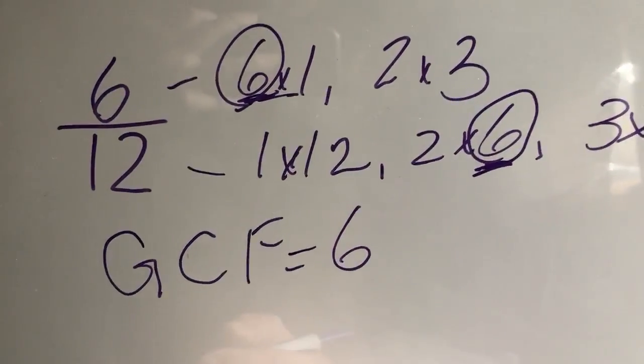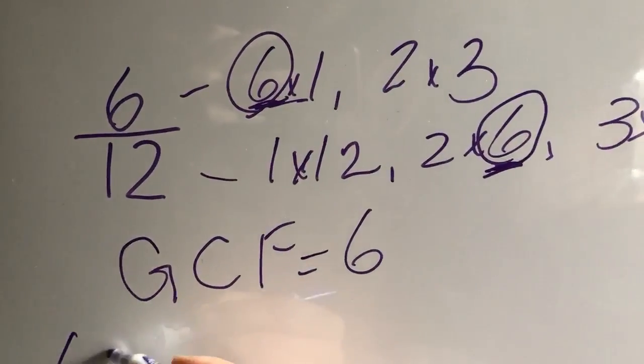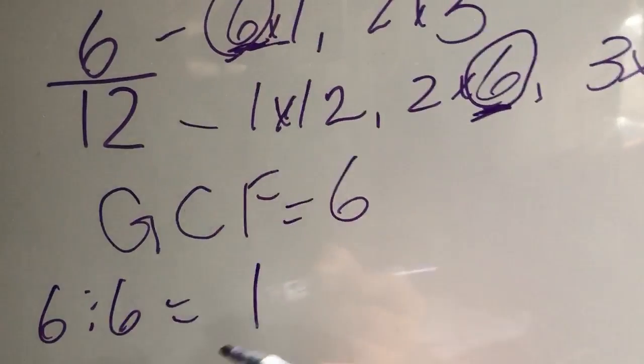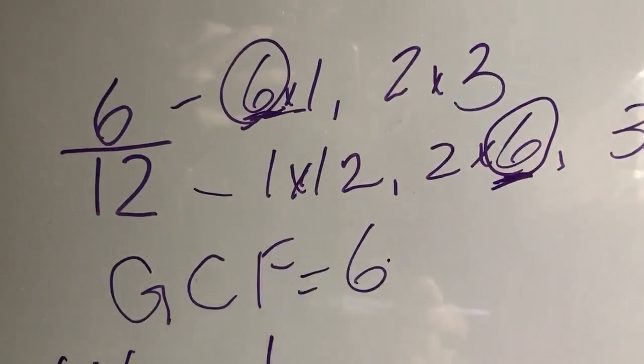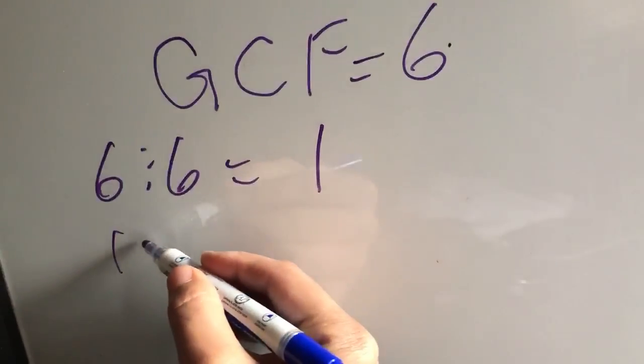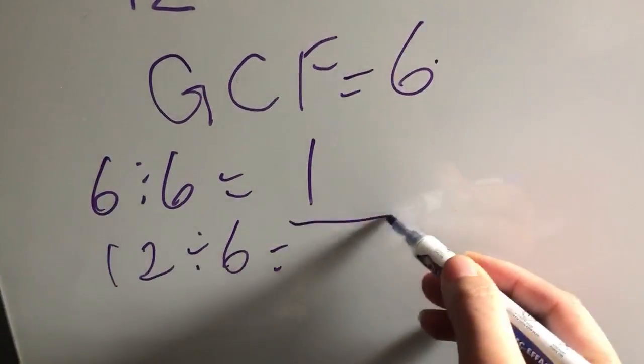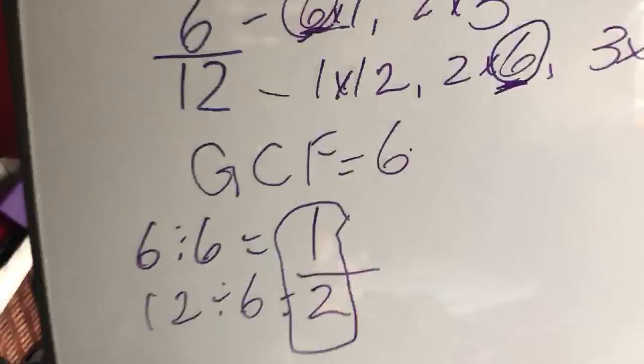So I'm not done yet. I now have to get the numerator, and I divide 6 divided by the greatest common factor, which is 6, equals 1. And then I look at the denominator, and I have to divide it also by 6. I can't divide it by something different. Okay, so I do 12 divided by 6 equals 2. So this is my new simplified fraction.